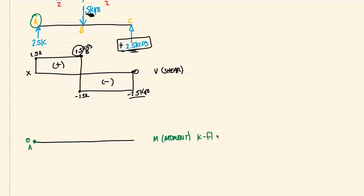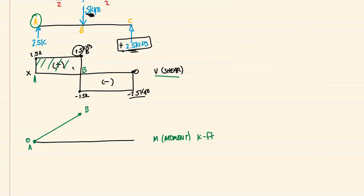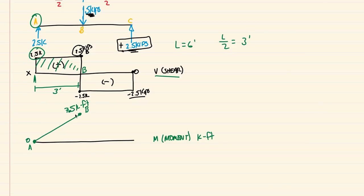Between points A and B, the shear is constant at 2.5 kips, which means the slope of the moment diagram is constant — so the moment is linear from A to B. To find the value at point B, we calculate the area under the shear diagram between A and B: that's 2.5 kips times 3 feet, which equals 7.5 kip-feet. So the moment diagram reaches a peak of 7.5 kip-feet at point B.